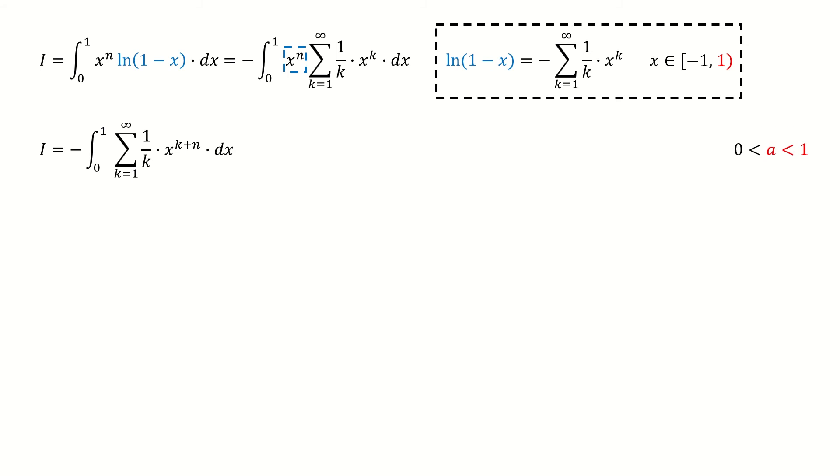First, we introduce a parameter a, and a is less than 1. Then we write the integral into this way. Because this logarithm series is uniformly convergent on this closed interval from 0 to a, we can switch the sum and integral.